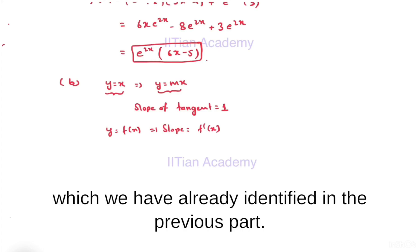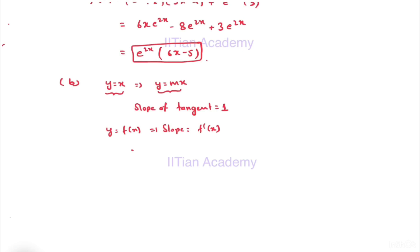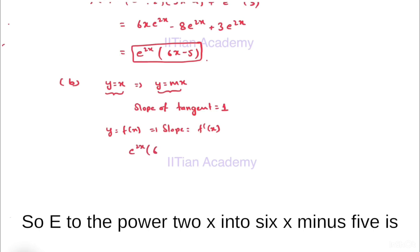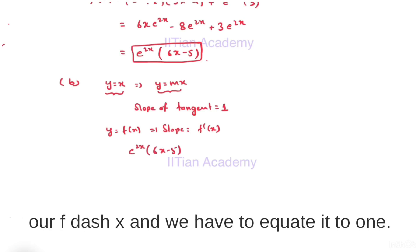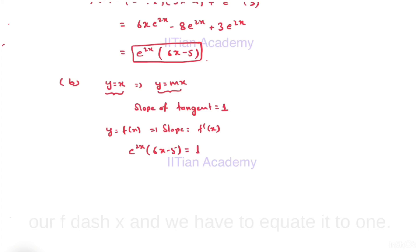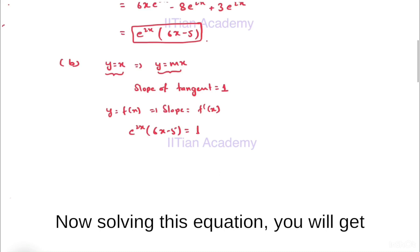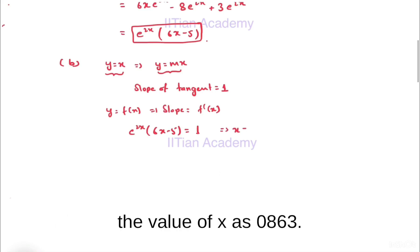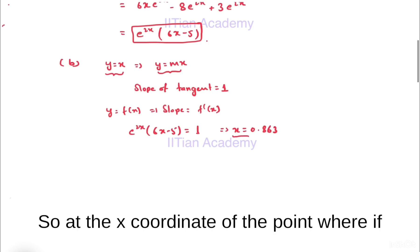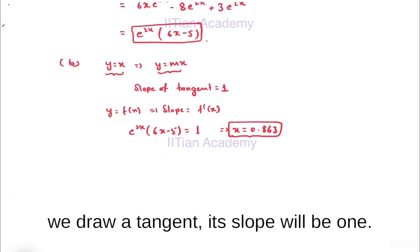The slope of the tangent equals 1. The slope of y = f(x) is given by f'(x), which we already identified in the previous part. So e^(2x)(6x - 5) = 1. Solving this equation, we get the value of x as 0.863. At x = 0.863, if we draw a tangent its slope will be 1.